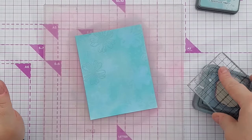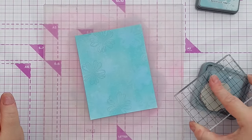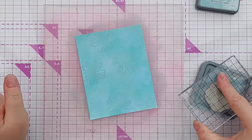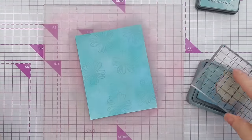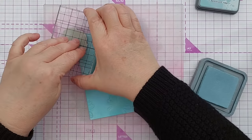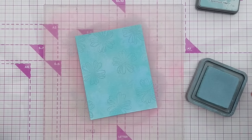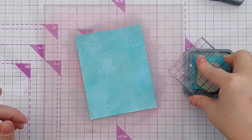I'm rotating the stamp each time I stamp it so I'm getting different bits of the flower pointing in different directions. Now I'm going to take my Salvaged Patina and do the same thing.